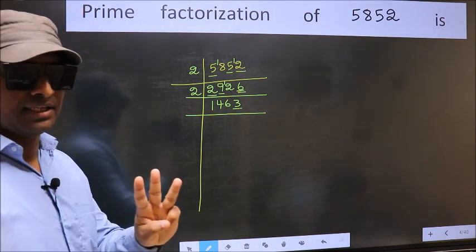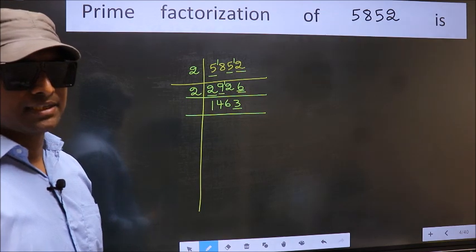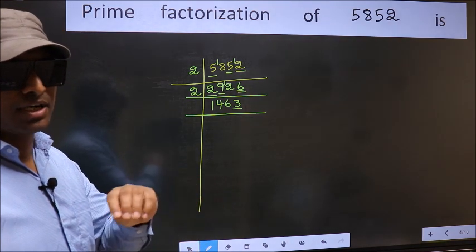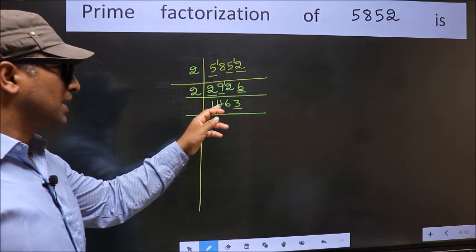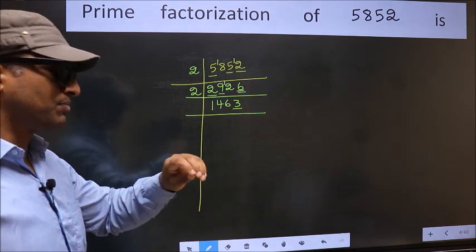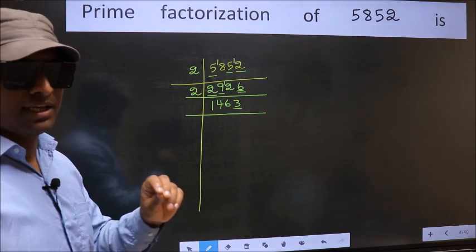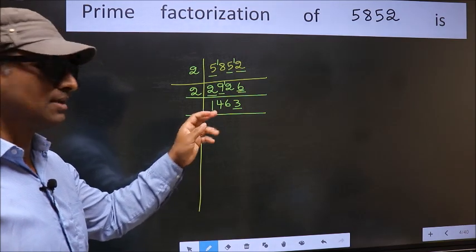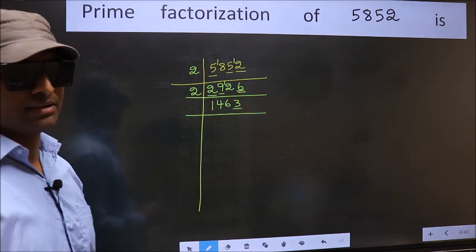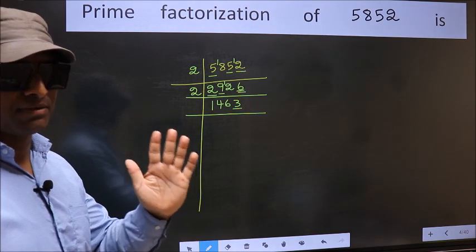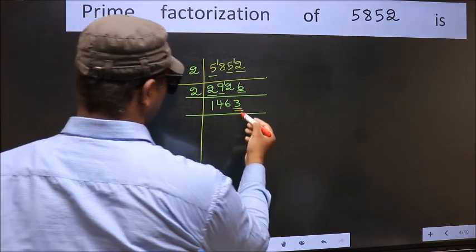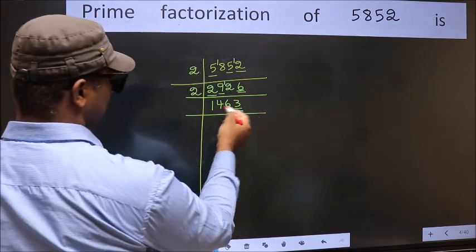Prime number 3. To check divisibility by 3, we should add the digits. What I mean is 1 plus 4 plus 6 plus 3. We get 14. And 14 is not divisible by 3. So this number also not divisible by 3. Next. Prime number 5. Last digit is neither 0 nor 5. So this is not divisible by 5. Next.